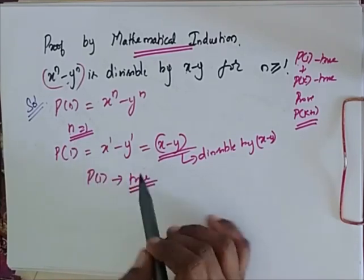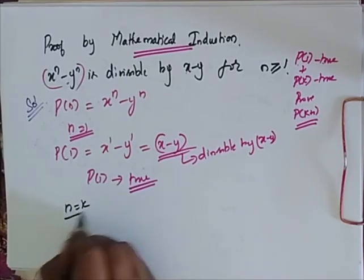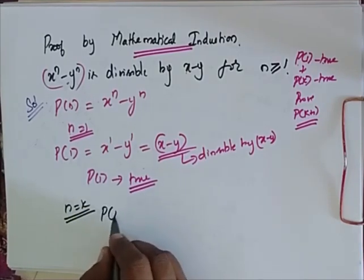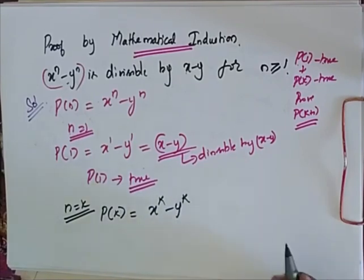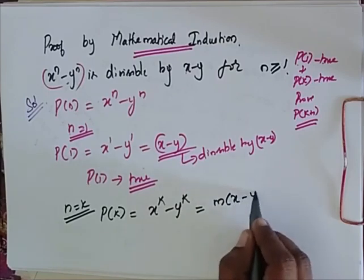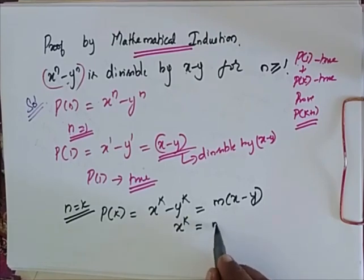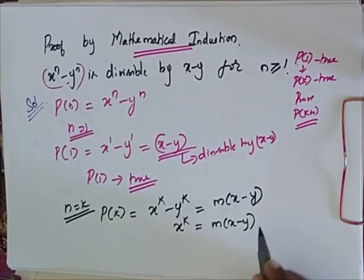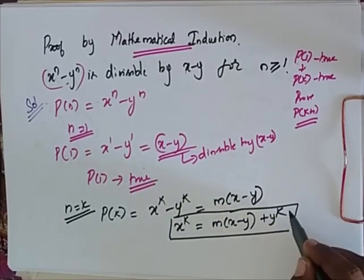Since it is true for n is equal to 1, I assume that it is true for n is equal to k. So my P of k is equal to x power k minus y power k, which is equal to some multiple of x minus y. So now I say that my x power k is equal to m of x minus y plus y power k. Remember this — we will use it for further proof.